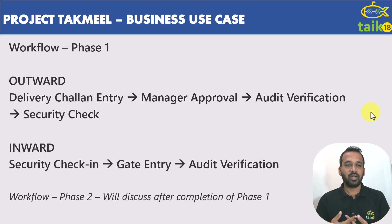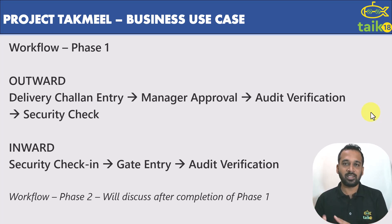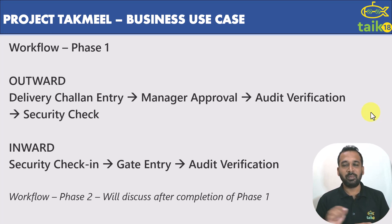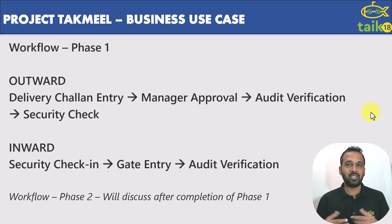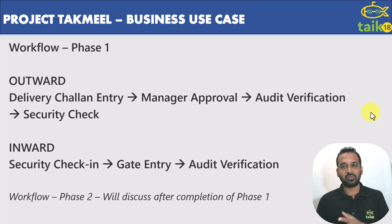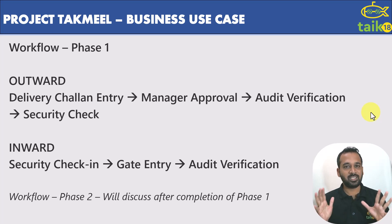Similarly, when goods come in, first the security will check whether it is proper as per the delivery challan from the supplier, and they will match the physical goods. After that, they will make an entry in the gate entry records, and then it will go to audit verification — the auditor will verify whether the goods which arrived are in the right quantity and right material. They will not inspect the material quality, but in terms of quantity, they will measure everything. Workflow phase two will be discussed after completion of phase one. This is the business use case.